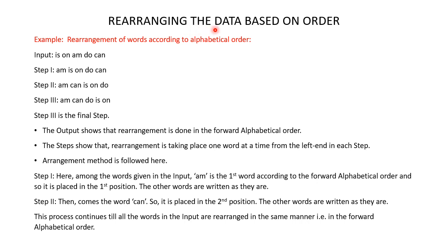Let's now learn how data is rearranged based on order with the help of an example. In this example you will learn how words are rearranged according to alphabetical order. Here in this input you are given only words, then you are given three steps and it's given that step 3 is the final step — this means step 3 is the output. The output clearly shows that the rearrangement is being done in the forward alphabetical order, meaning from A to Z.